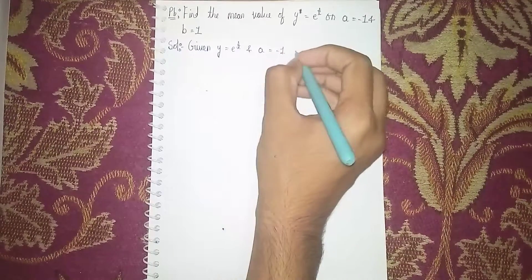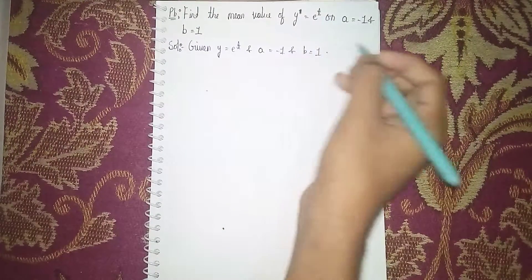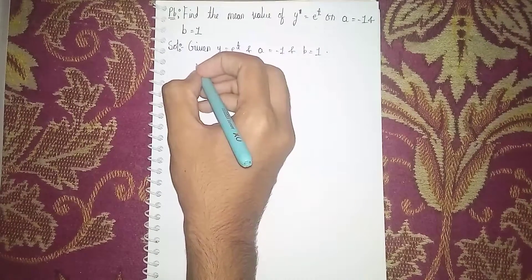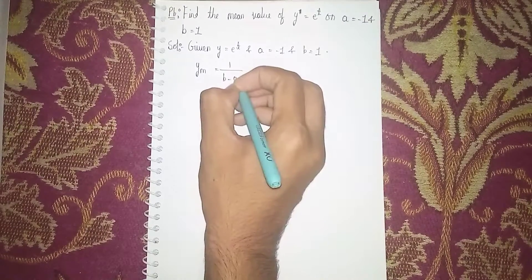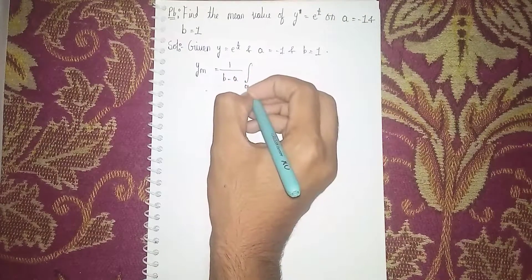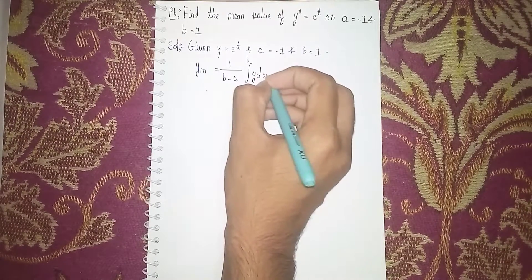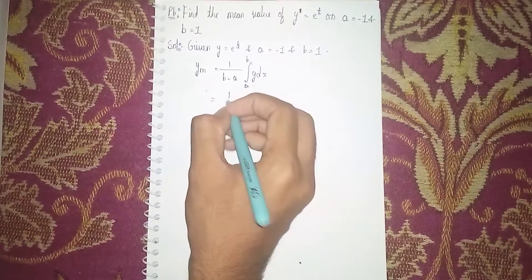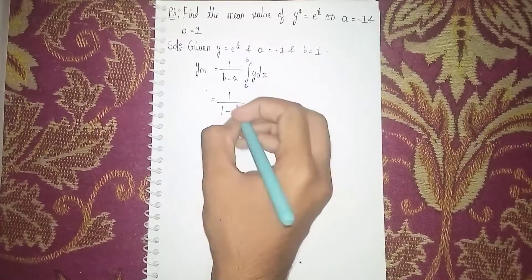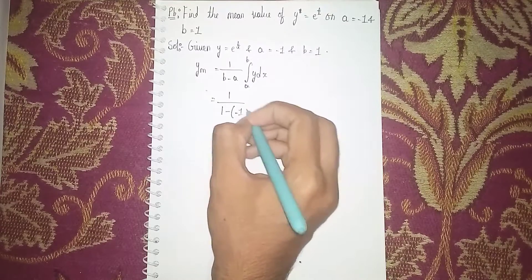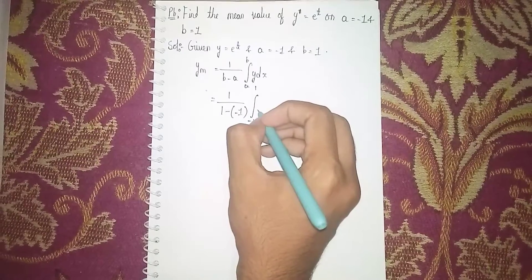Now, the formula for mean ym is equal to 1 by b minus a, integrated a to b, y dx. So here it becomes 1 by, what is our b? b is 1, then minus, then a is minus 1. So, 1 minus minus 1. Integrated minus 1 to 1, y is e power t.